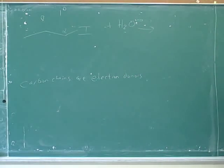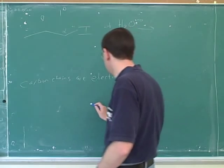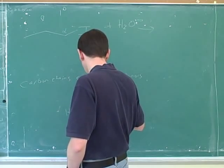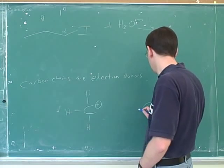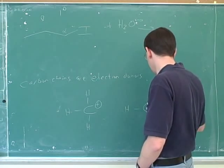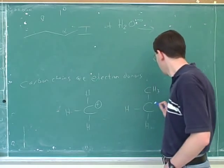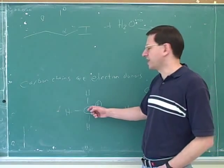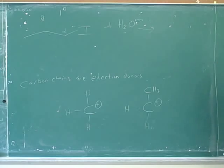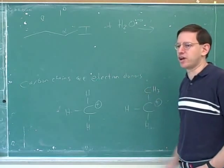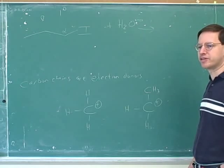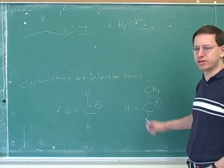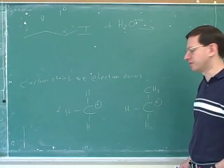Carbon chains are electron donors. For example, let's compare two carbocations: one that doesn't have any carbon chains attached to it, and one that has one carbon chain attached to it. The carbon chains donate electrons, so the one with the carbon chain attached is more stable. And the more carbon chains we add on, the more stable it's going to be.